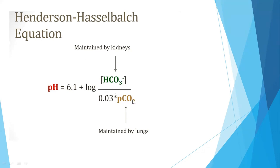Bicarbonate is maintained by the kidneys and pCO2 is maintained by the lungs. If you remove the constant, pH is directly proportional to bicarbonate and inversely proportional to pCO2. So if bicarbonate increases, the pH will increase. If pCO2 increases, the pH will decrease and it will go into acidosis.